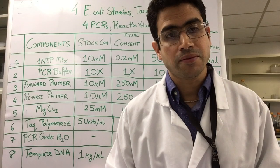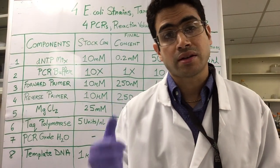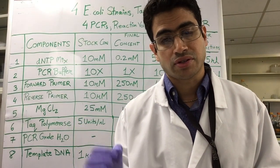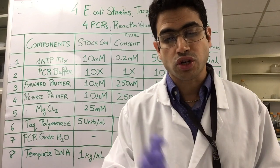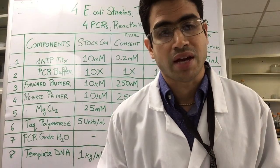You'll mix everything evenly, and then you will aliquot, add 24 microliters from this bulk master mix into each of the four PCR reaction tubes.